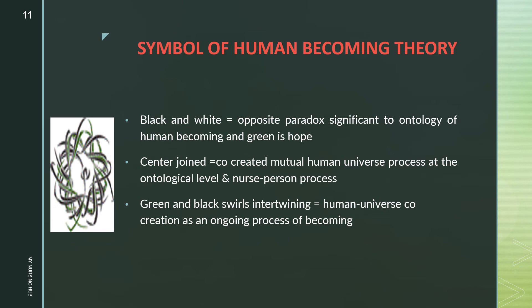The symbol of Human Becoming Theory uses black and white to represent opposite paradoxes significant to the ontology of human becoming. Green represents hope. The center joint represents the co-created mutual human universe process at the ontological level — the nurse-person process. The green and black swirls intertwining represent human universe co-creation as an ongoing process of becoming.